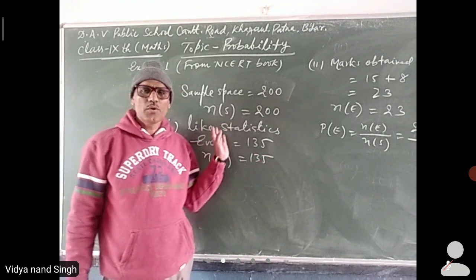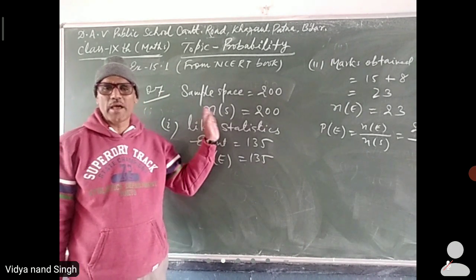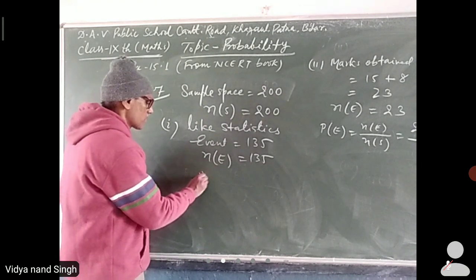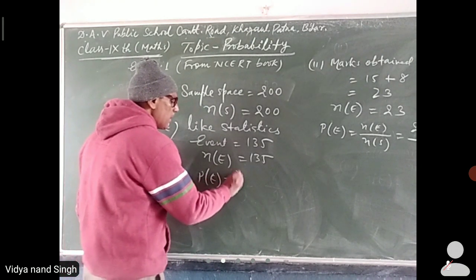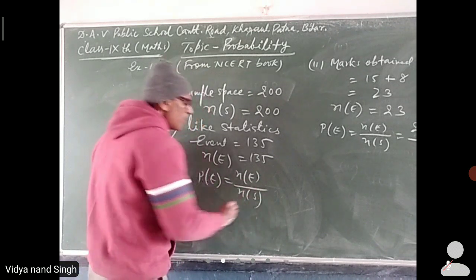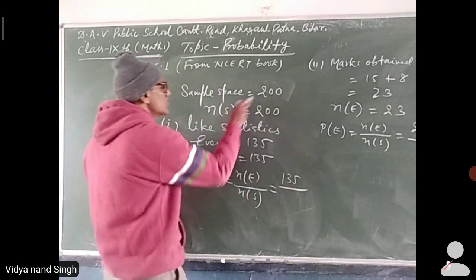Now we find number of E and number of S. Number of E divided by number of S: 135 by 200.